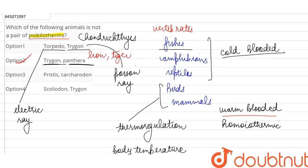Because again, in option C, Carcharodon is a scientific name that we use for the great white shark, again a cartilaginous fish. And similarly Pristis also.